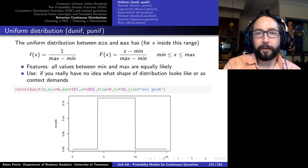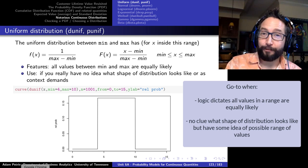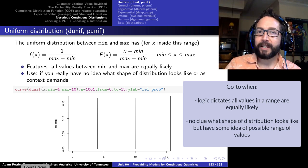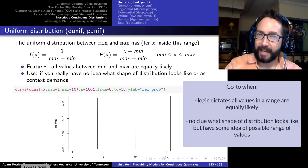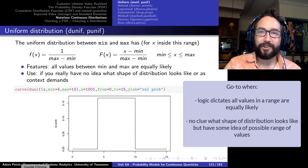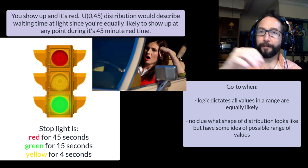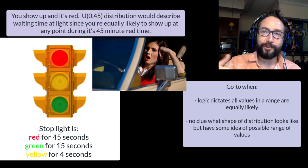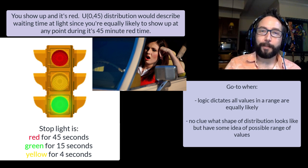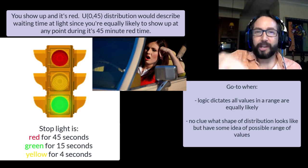The first stop in our notorious zoo is the uniform distribution, which typically is one of our last resorts. We really only use it when we only know the range of possible values but have no details about the shape of that distribution. There are a few contexts where we'd use it by logic alone — like if a stoplight was red for 45 seconds, green for 15, and yellow for four, we could use the uniform distribution to describe the time remaining on the red light, since it could be anywhere from zero to 45.